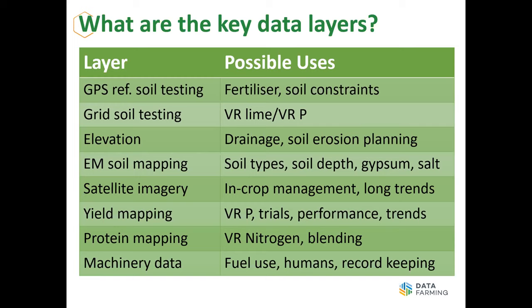Elevation mapping is particularly important in the north — either for drainage planning on the flats or soil erosion on the slopes — and the elevation data collected from all your machines can be used for that planning. EM soil mapping is another layer. EM has been around for decades but hasn't been widely accessible to the Australian farmer. We're setting about changing that, with a number of machines through the country. It's really good for picking up soil types, particularly clay content. You'll see in Fraser's work where we've got really good correlations of soil types, soil depth, and where you want to look for salt and sodicity problems and where to apply gypsum.